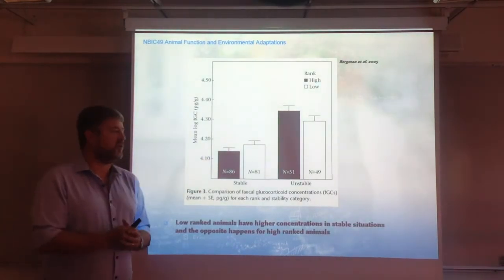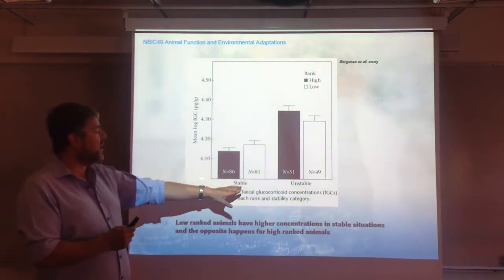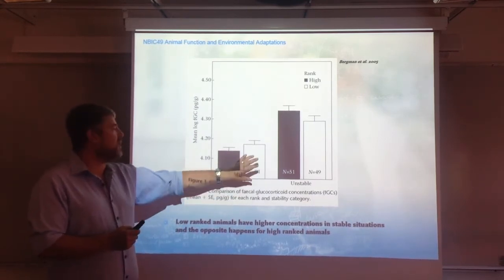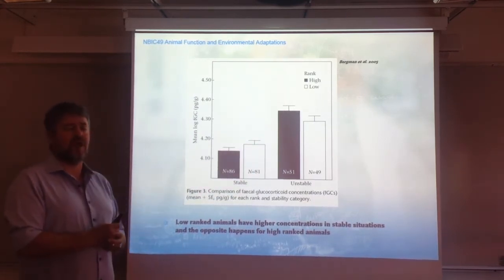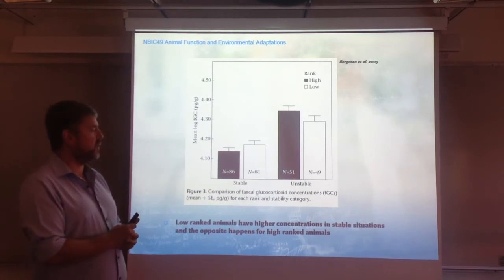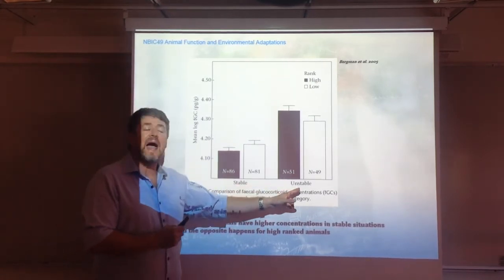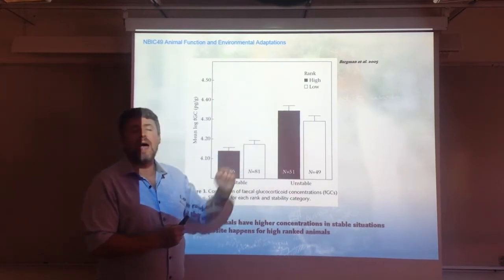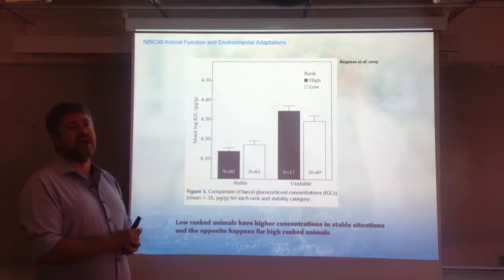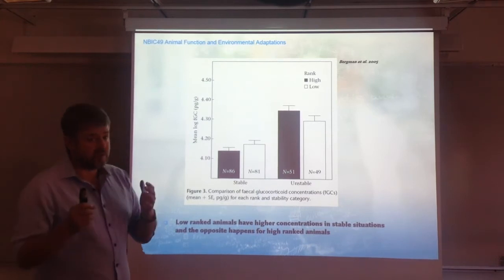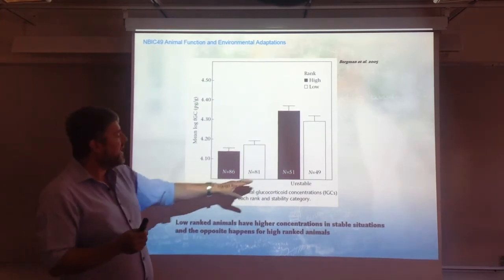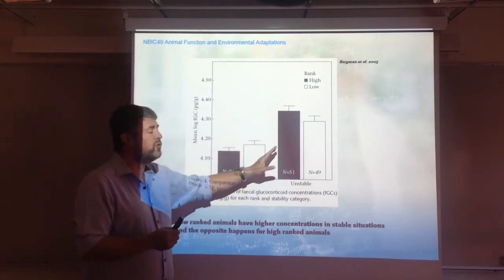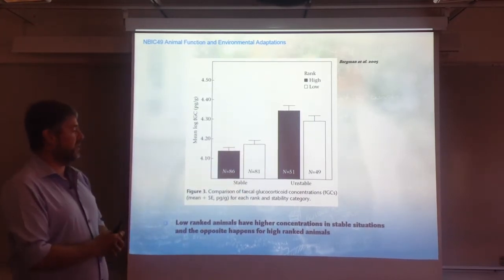The essential results from this paper show that in stable social conditions, it's the lowly ranked individuals that have higher glucocorticoid concentrations. But in unstable group environments, it's the highly ranked males that have higher levels. Notice that, as expected, in unstable conditions the glucocorticoid levels for both groups are actually increasing.